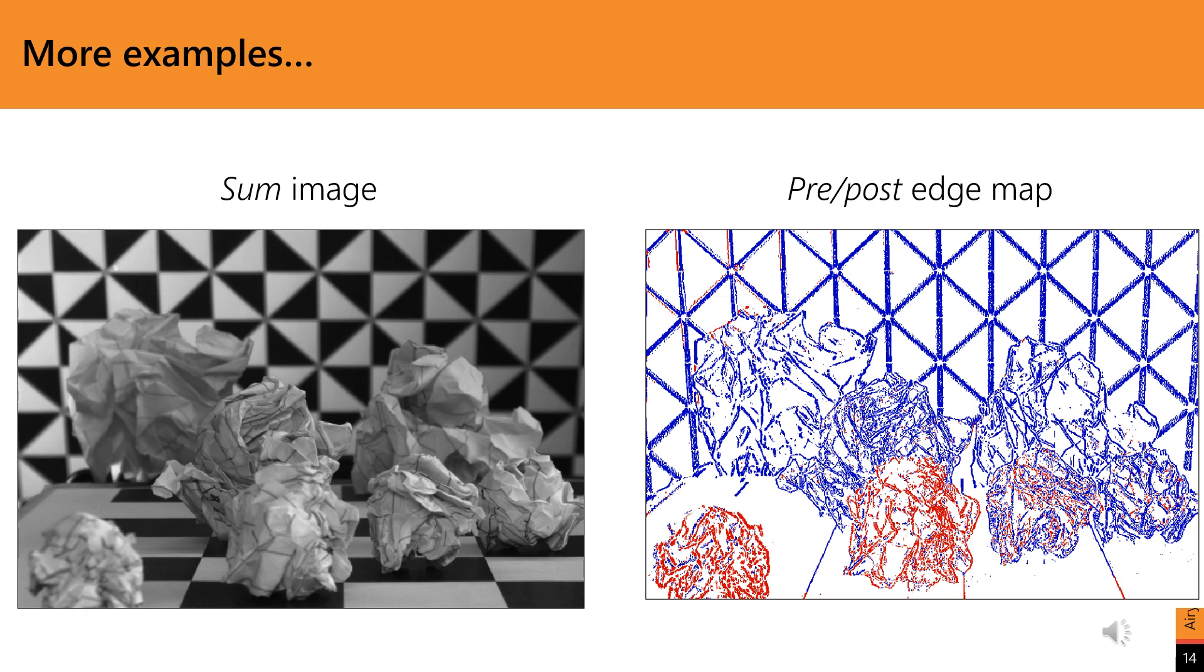This next scene has more edge orientations. Balls of crumpled paper are placed on a checkerboard floor. Far in the background is a flat wall with various black and white edges. Again, the pre-post edge estimates are shown to the right of the sum image. Note that the horizontal edges of the checkerboard and the back wall are missing since our TDM only has vertical gratings.